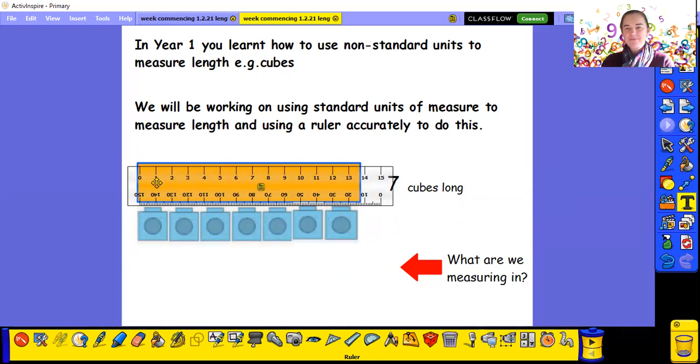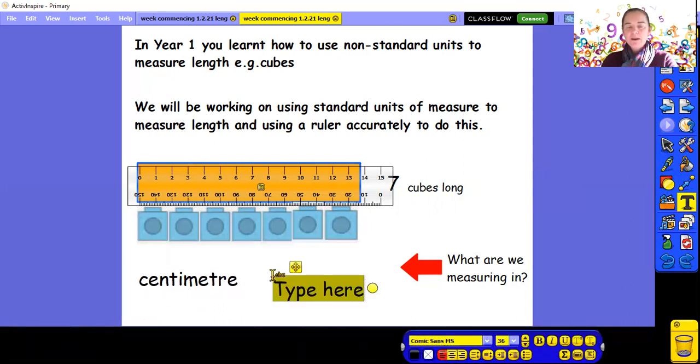Some of you might have said centimetres, and if you did, well done. Yes, when we're using a ruler, we're counting in centimetres. And this gap here, in between the zero and the one, and the one and the two, and the two and the three, that's called a centimetre. So how do we write the word centimetre? I'm going to type the whole word for you so you can see how it is spelt. This is our word centimetre, and that's quite a long word, isn't it? So if I was having to use that all the time to record how long something is, if I had to write that every time, it would take forever. So there's another way of writing centimetre, and this is how we write it. We need two letters. We need a C and an M. So when we're writing centimetre in our maths books, that is what we would write.